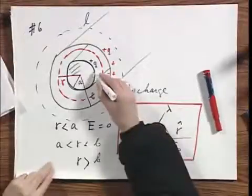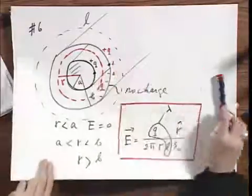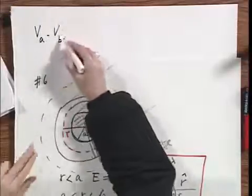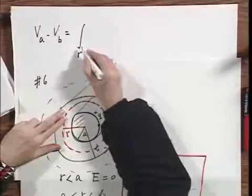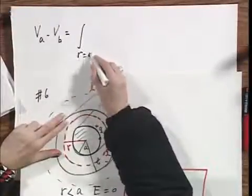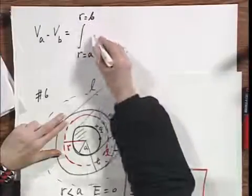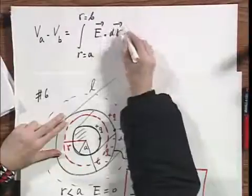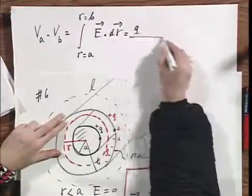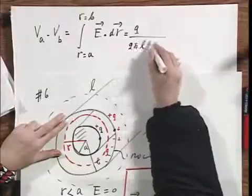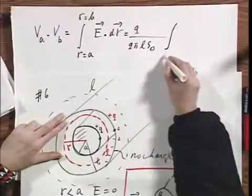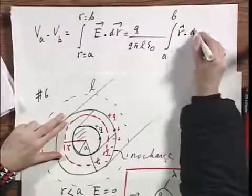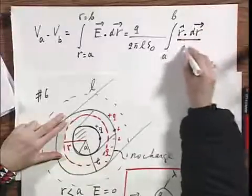What is now the potential difference between this point and this point, between the two cylinders? And I will just write that down, shorthand notation, as V_A minus V_B, which is the integral in going from R equals A to R equals B of E in the cavity dot dr. That equals Q divided by 2π L epsilon zero times the integral in going from A to B, R roof dot dr divided by R.